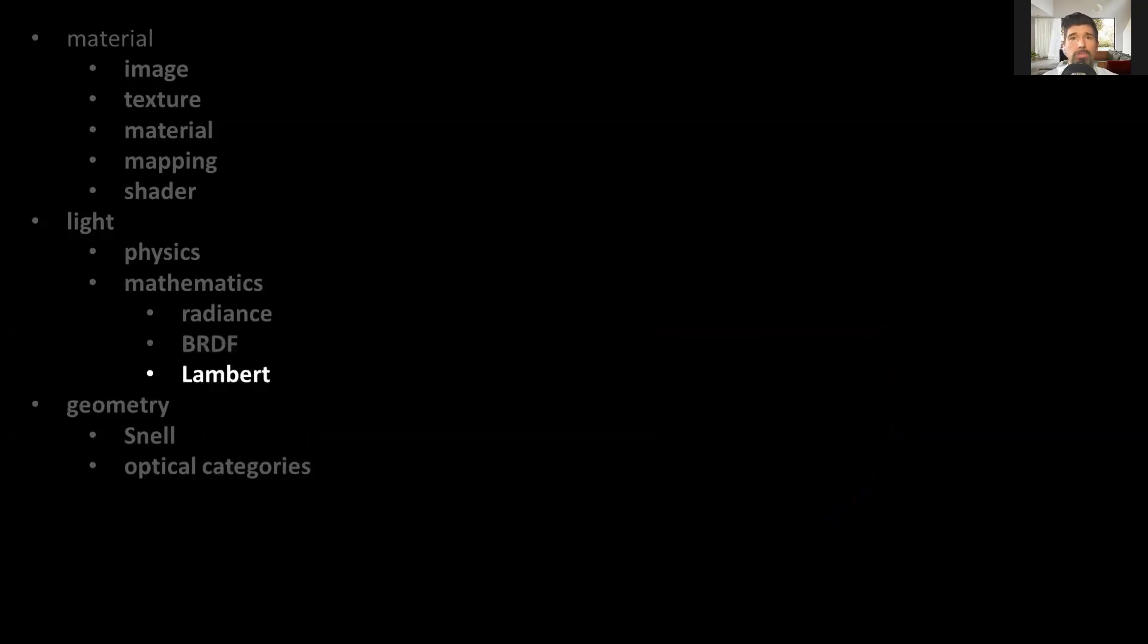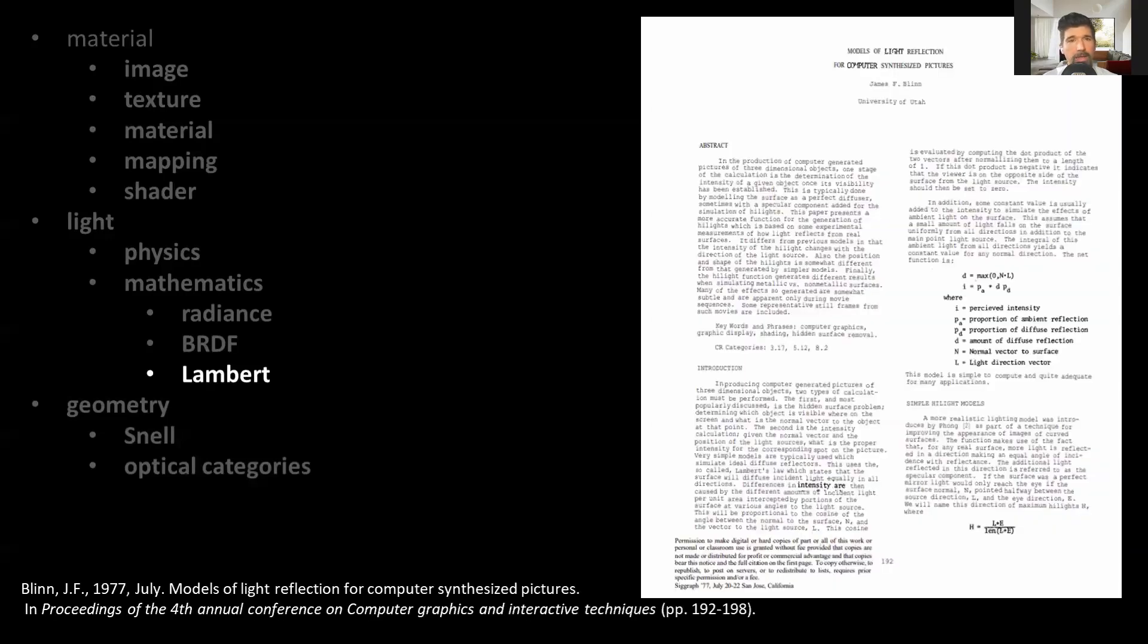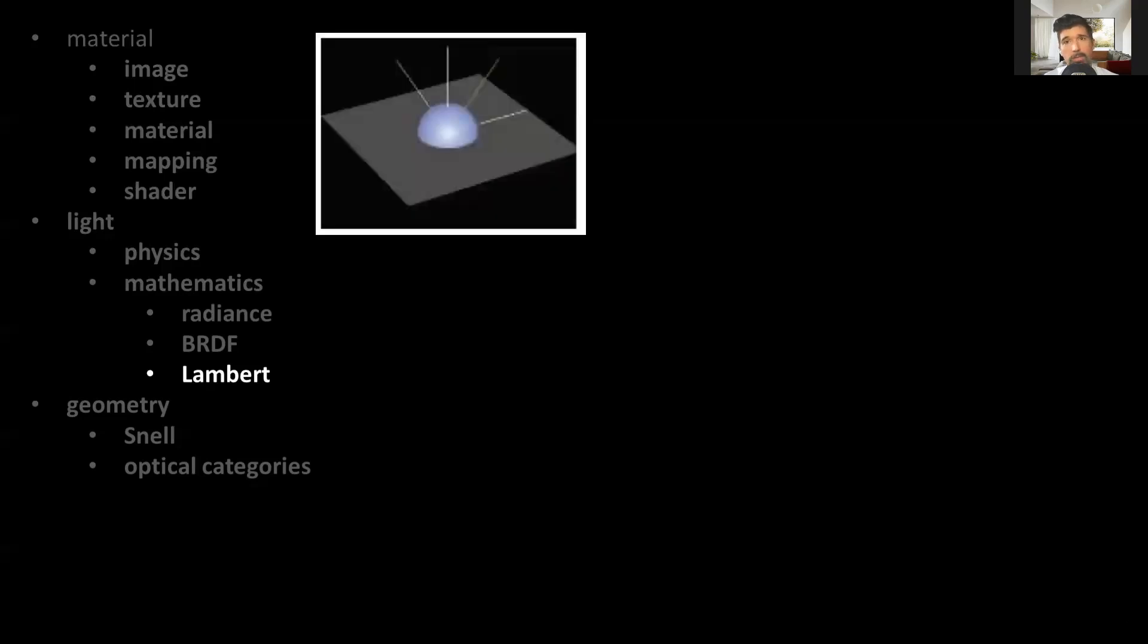This is where we have to include the concept of the conservation of energy, or Lambert's law. Lambert's law of absorption states that equal parts in the same absorbing medium absorb equal fractions of the light that enters them. This concept was introduced back in 1977, basically stating that the amount of energy that the light ray carries is equally distributed in all directions upon hitting a surface. This led to this type of reflection model for incoming light rays.